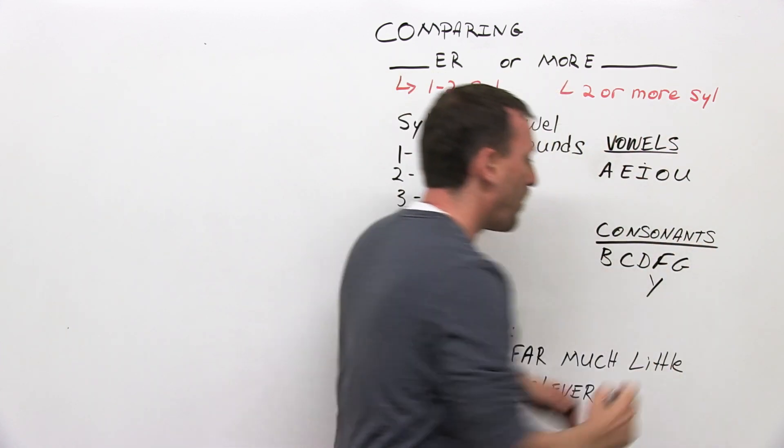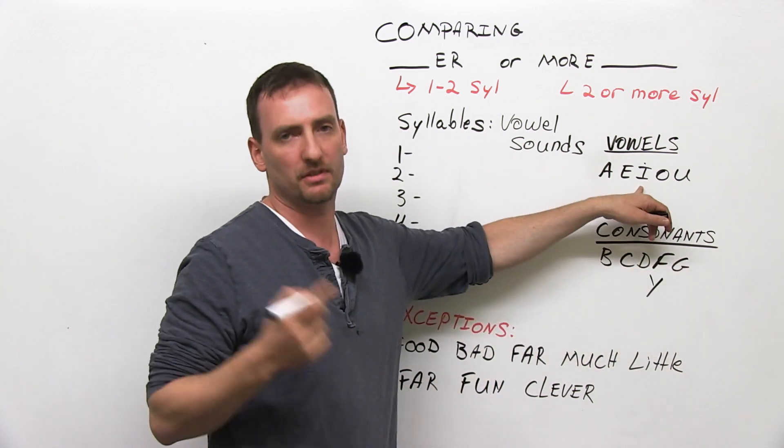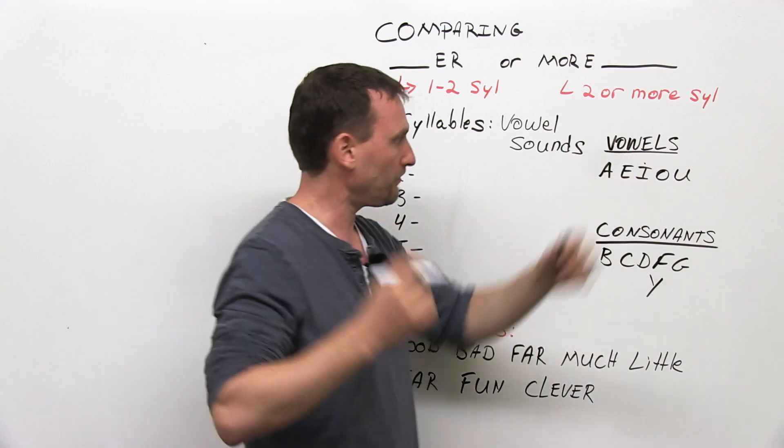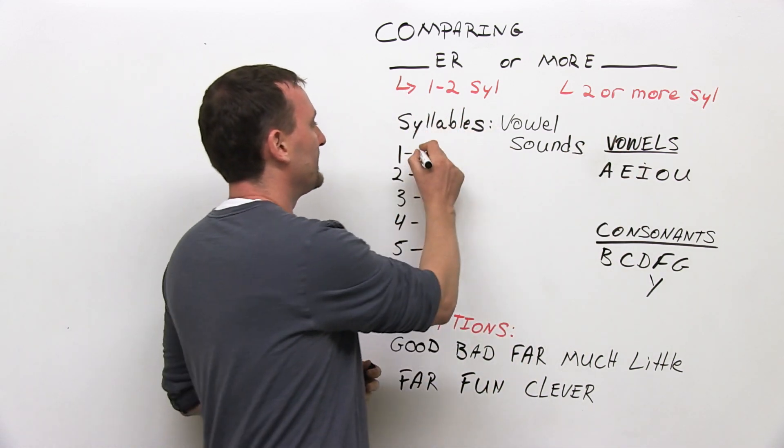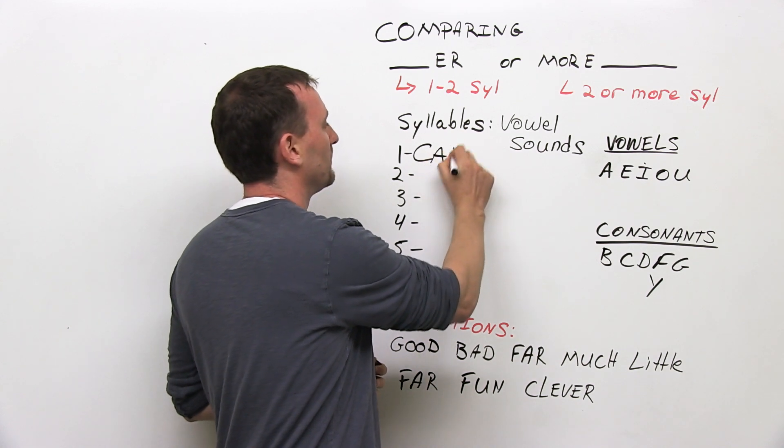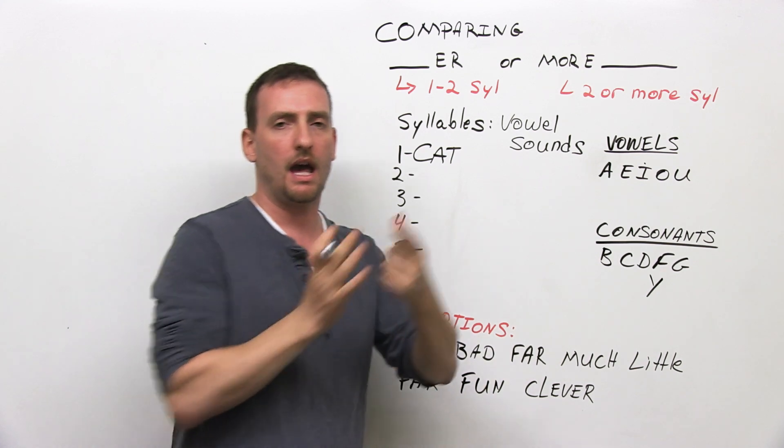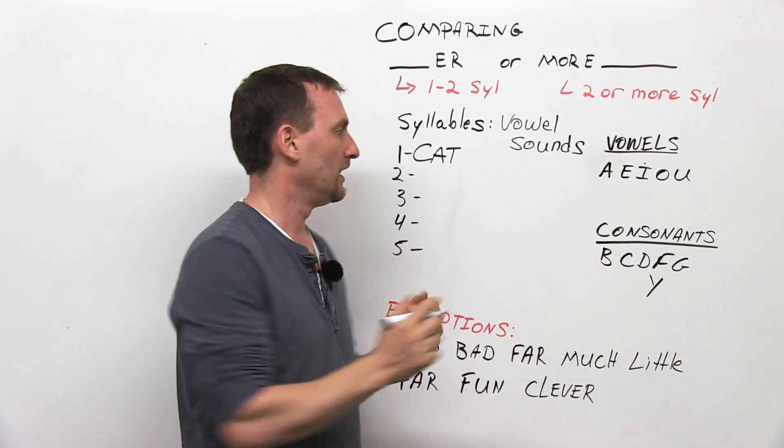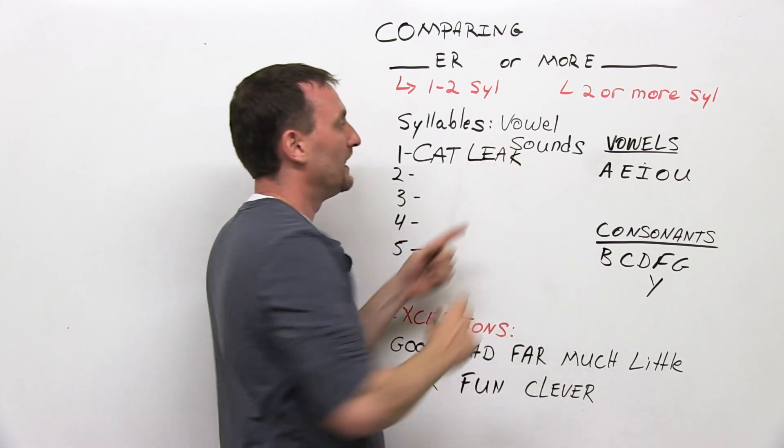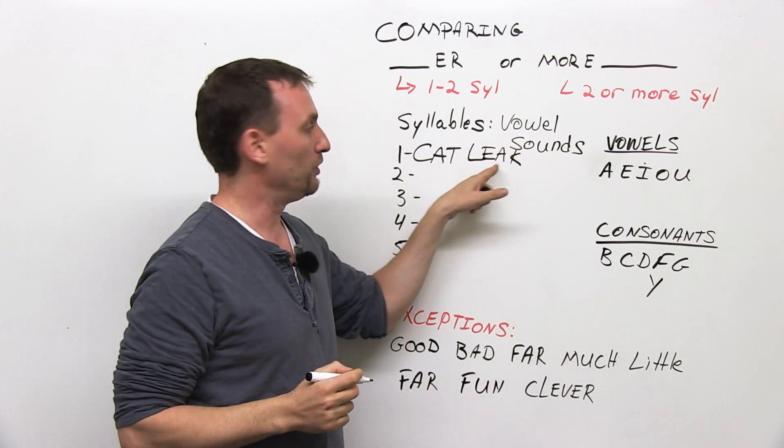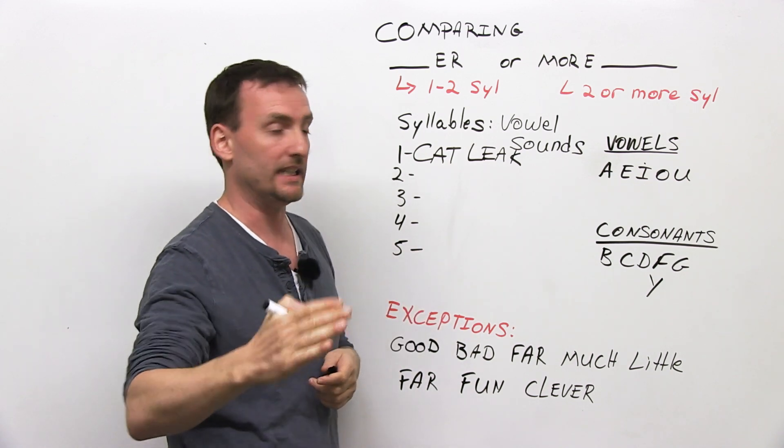Keep in mind, Y is a consonant, even though it sounds often like a vowel. So, back to syllables. These are the vowel sounds. For example, the word cat. How many vowel sounds are in the word cat? One. A, cat. Here's another one-syllable word. Leak. Two vowels, one vowel sound. Leak. E.